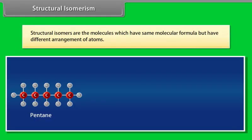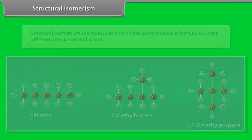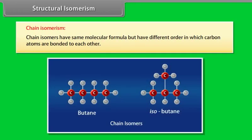Structural isomers are the molecules which have the same molecular formula but have different arrangement of atoms. Chain isomers have same molecular formula but have different order in which carbon atoms are bonded to each other.